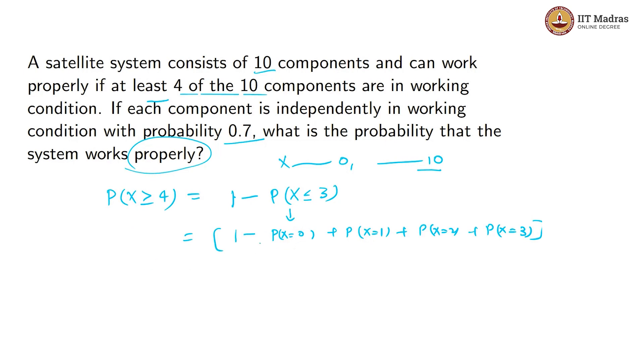Now we can see probability P(X=0), that means out of 10, so 10C0. Probability of success what we have is 0.7 to the power 0, times 1 minus 0.7, which is 0.3, to the power n minus r, that is 10 minus 0, which is 10.